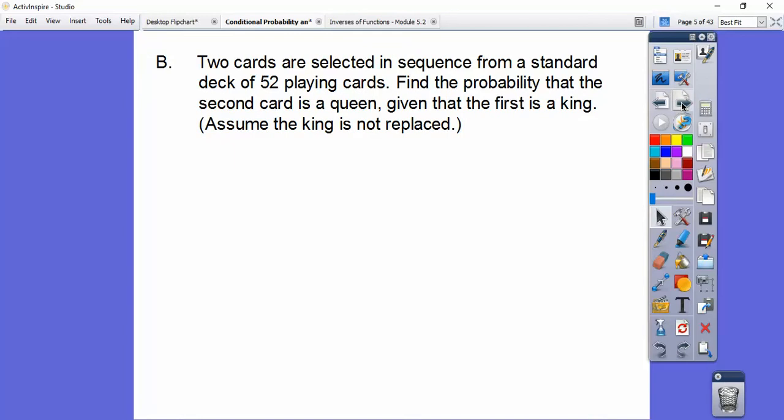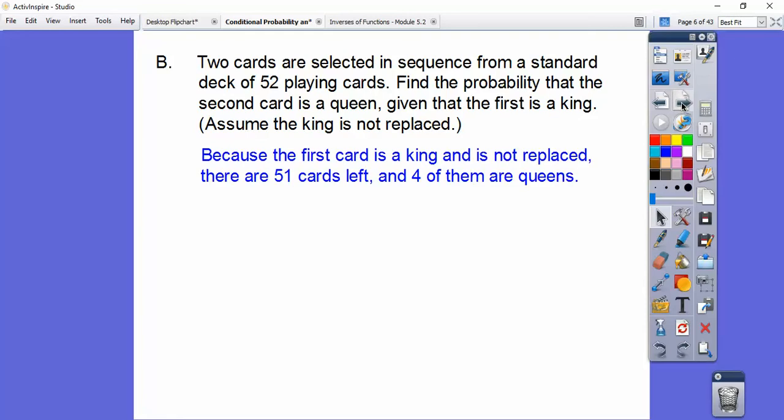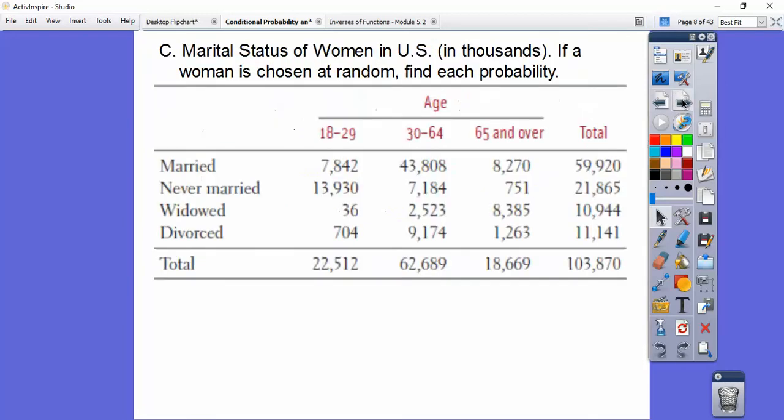Here's an example. Two cards are selected in sequence from a standard deck of 52 playing cards. Find the probability that the second card is a queen given that the first card is a king, and we're assuming that it's not being replaced. So because the first card is a king, it's not going to be replaced. There's 51 cards left, but the king gets taken out, so there's still four of them are queens right there. So the probability of pulling a queen given that we left the king out is four out of 51, which is about 78 thousandths. 0.078 is 78 thousandths.